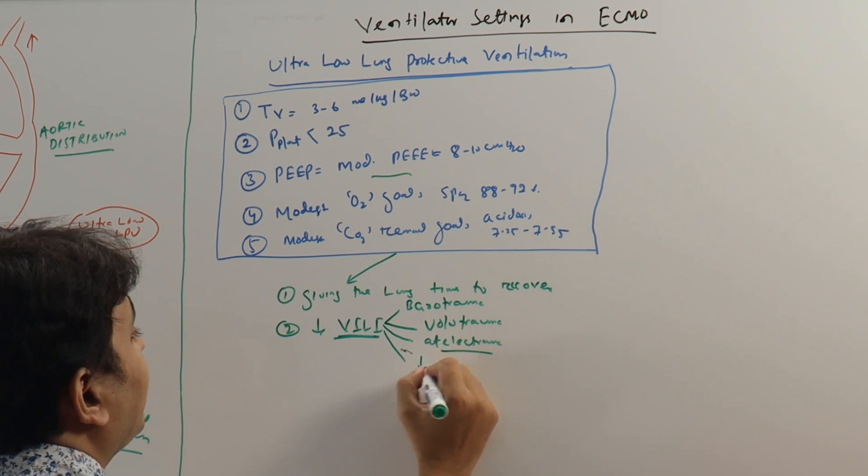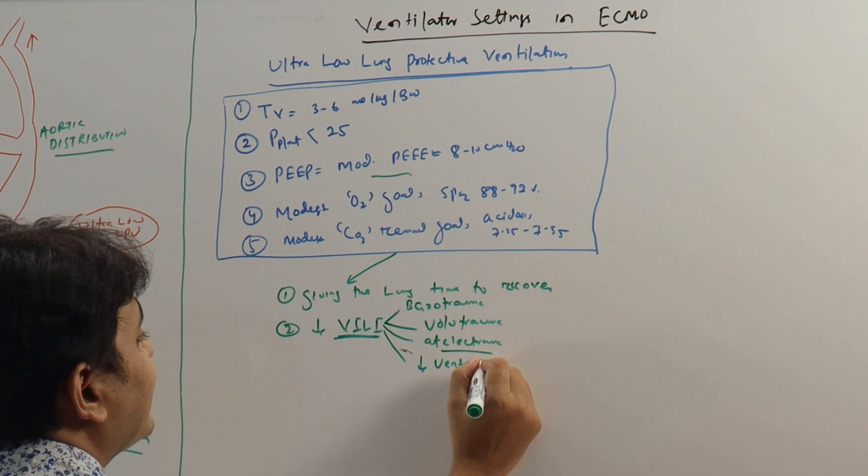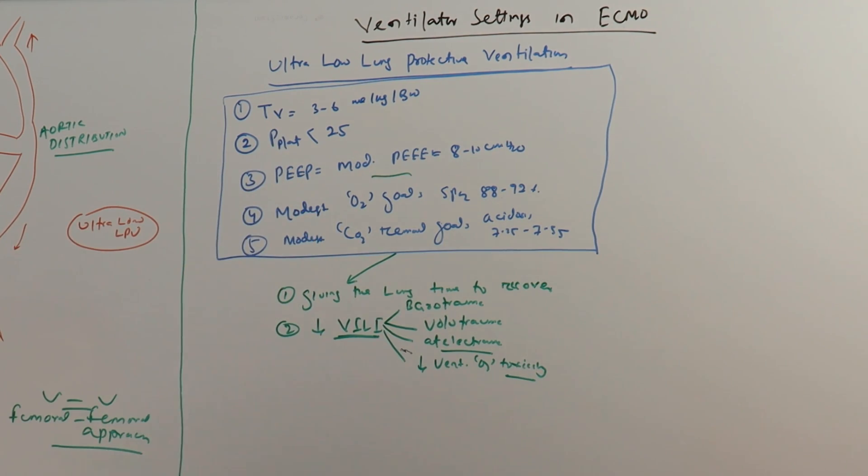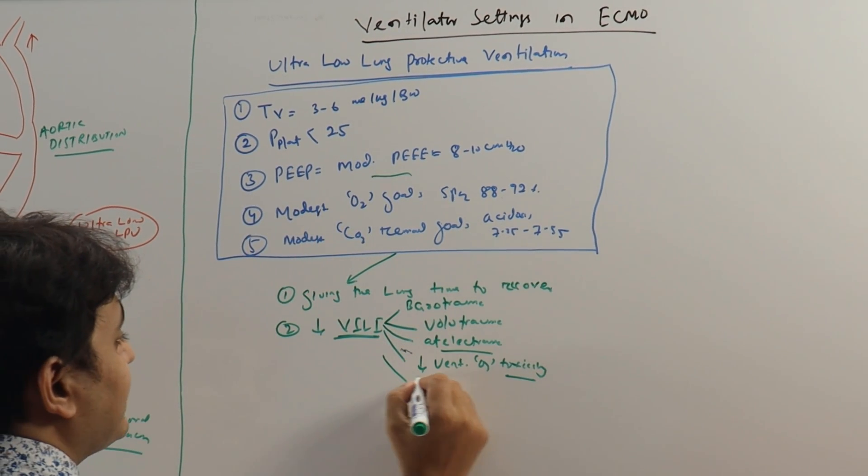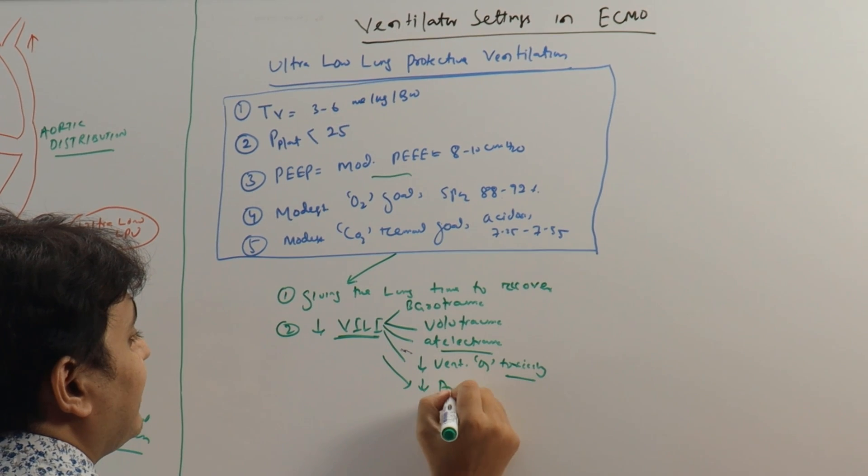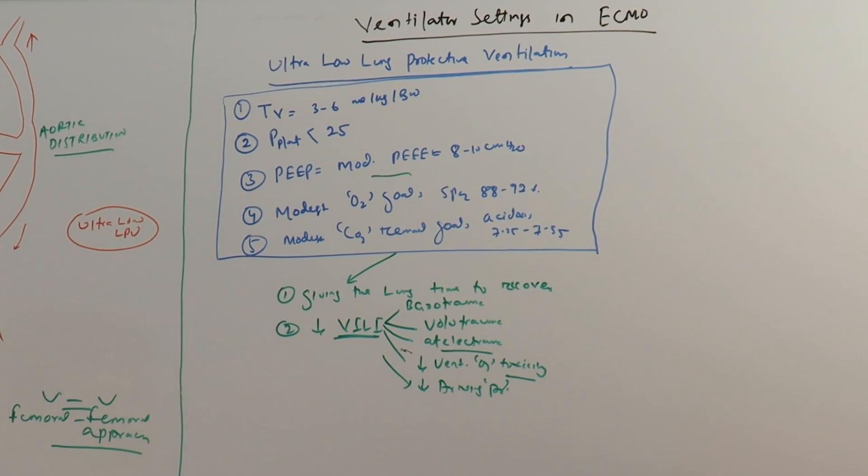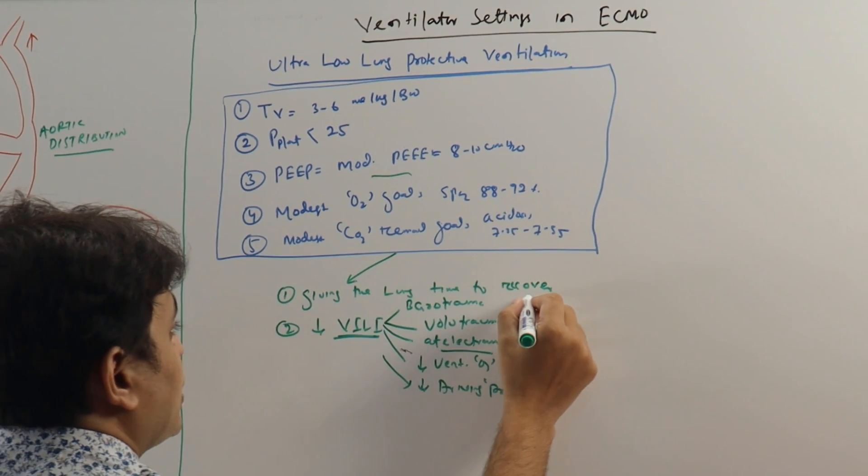Using a modern oxygen goal will prevent ventilator-induced oxygen toxicity. Because we are targeting a P plat of less than 25, it can also decrease the driving pressure and that will improve the mortality.